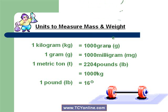And 1 pound is equal to 16 ounces. So these are the different units which we use to measure mass and weight, and these are the conversion formulas.